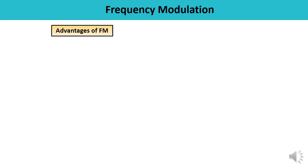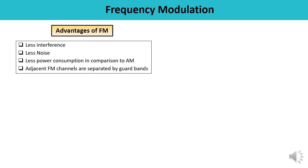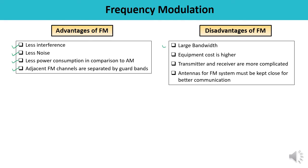The advantages of frequency modulation include less interference, less noise, and lower power consumption compared to amplitude modulation. Adjacent FM channels are separated by guard bands. The disadvantages include large bandwidth, high equipment cost, complex equipment design, and more complicated transmitter and receiver design. Also, the antennas used for FM systems must be kept close to each other for better communication.